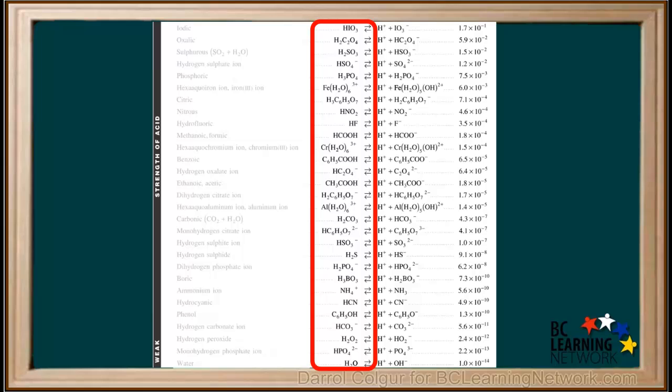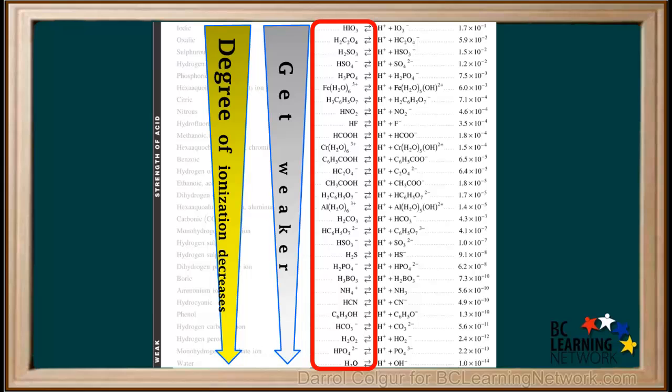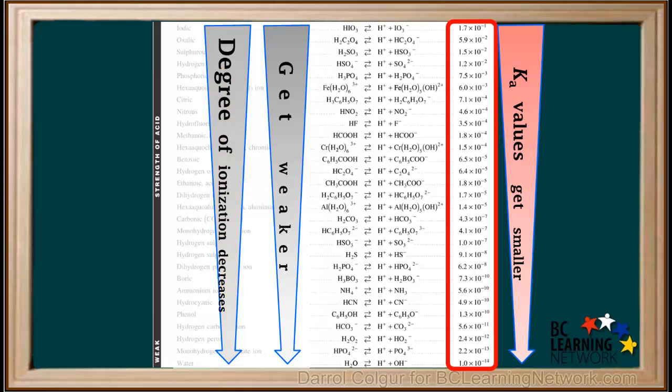Looking at the weak acids, it's important to understand that they get progressively weaker as we go down the left side of the table, from HIO3 to H2O. Because acids get weaker as we move down the table, we can also say that the degree of ionization decreases. This is indicated by the fact that the values of their ionization constant, Ka, get smaller as we move down the table. Take a look at these to verify this to yourself.